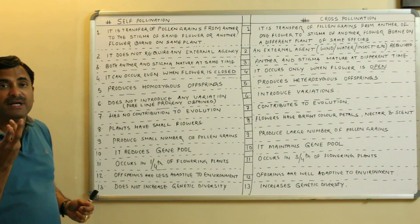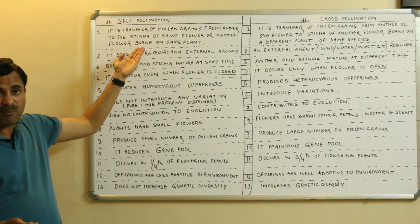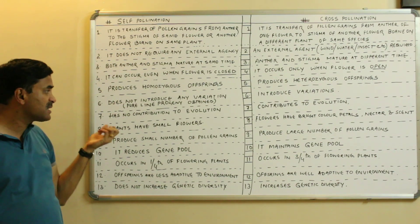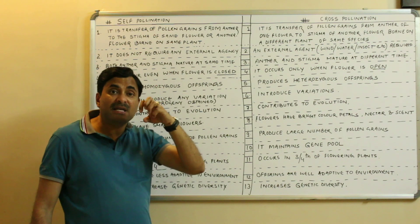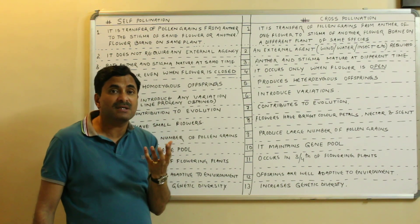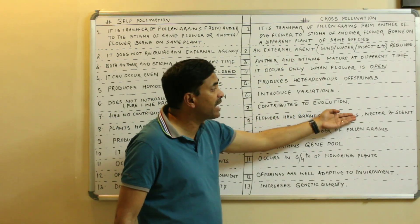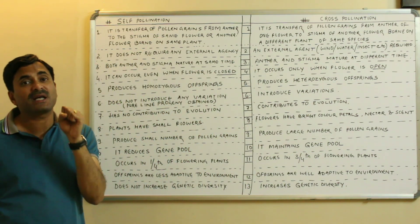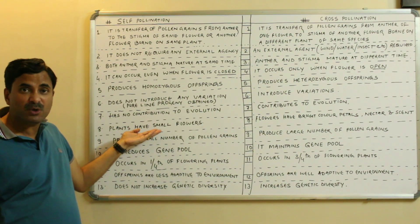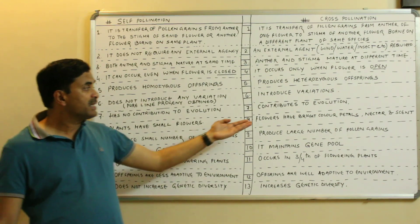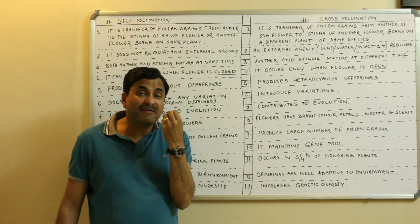Seventh point: plants that undergo self-pollination have small flowers, because they don't need to attract insects — so the flowers are small in size. Cross-pollination, in many cases, requires animal agency; to attract insects, the flowers must have bright colored petals, nectar, and scent. So cross-pollinated flowers are large with bright petals, nectar, and fragrance to attract insects for pollination.